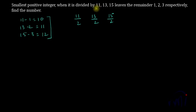11 by 2 is a factor of 11, and 13 by 2 is a factor of 13, and 15 by 2 is a factor of 15. 11 by 2 will be 5.5, and 13 by 2 will be 6.5, and 15 by 2 is 7.5.